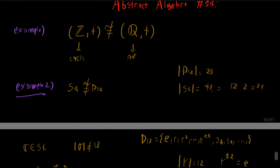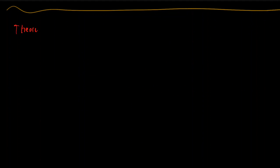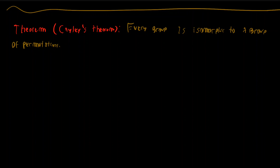With these three examples I hope it's clear how we can use these properties to prove that groups are not isomorphic. Now we're going to prove a very important result in abstract algebra, specifically in group theory. This is called Cayley's theorem, and it states: every group is isomorphic to a group of permutations.